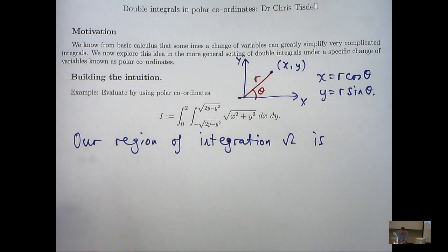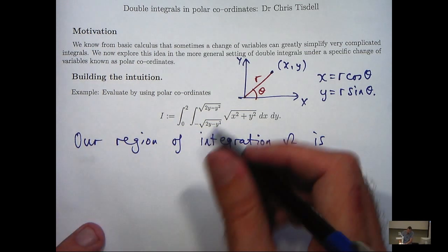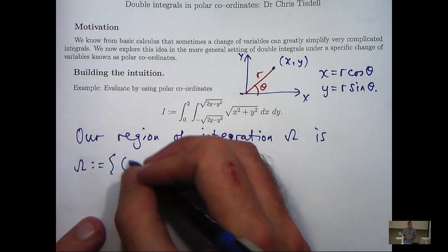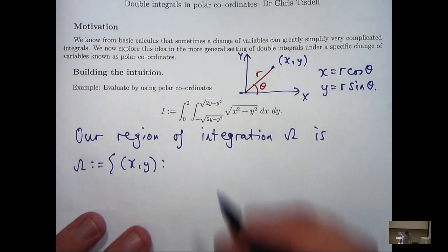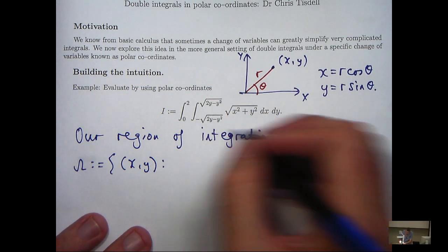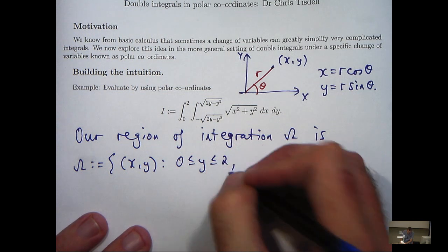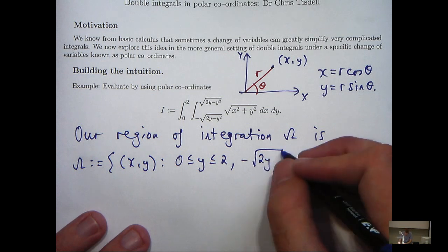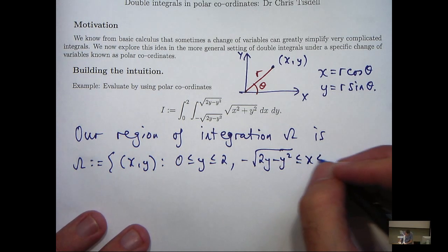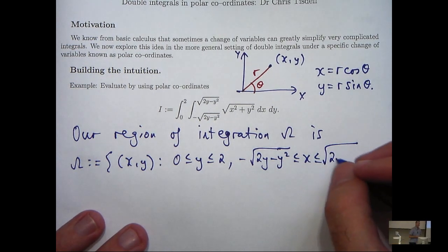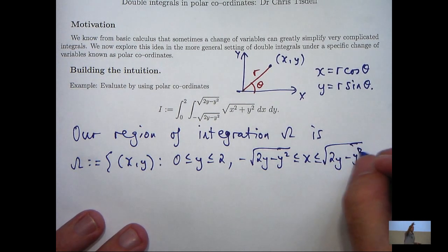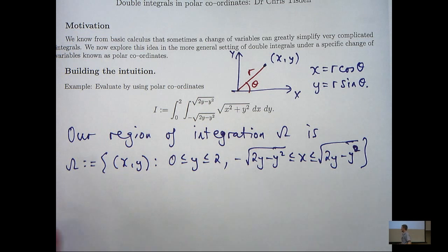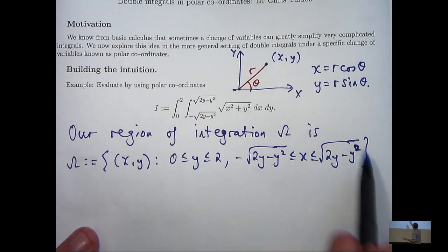So I'm going to denote the region of integration by omega. And I can see from the upper and lower limits that in Cartesian coordinates, our omega is all those, y is between 0 and 2, and x is between these two functions of y. So the first question is, what does this region actually represent?